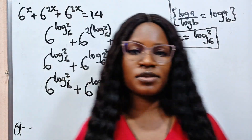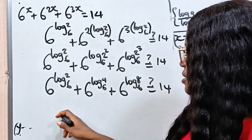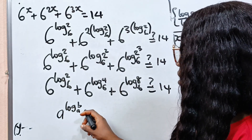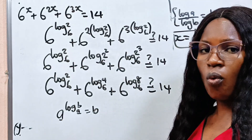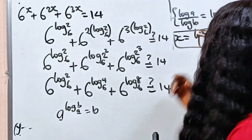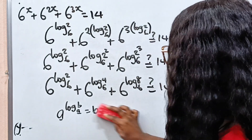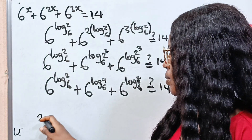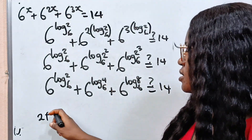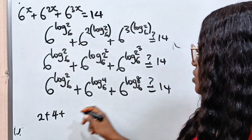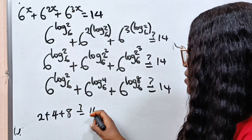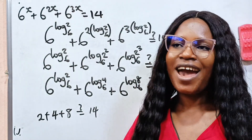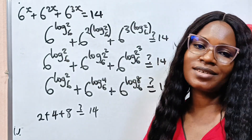Remember that A raised to the power of log B base A equals B. Once the base matches, the whole expression becomes B. Applying that here: 6 to the power of log 2 base 6 is 2, 6 to the power of log 4 base 6 is 4, and 6 to the power of log 8 base 6 is 8. Is this equal to 14? 2 plus 4 is 6, and 6 plus 8 is 14. That proves we are right. Thank you so much for watching, and see you in my next video.